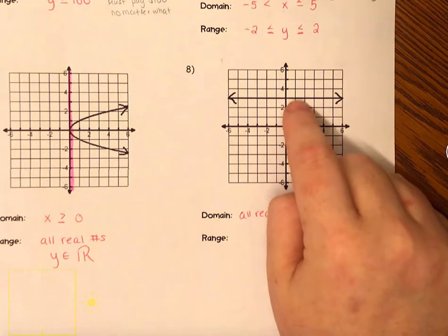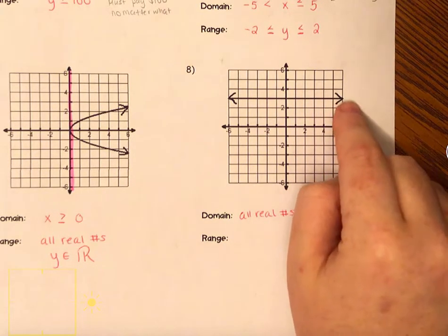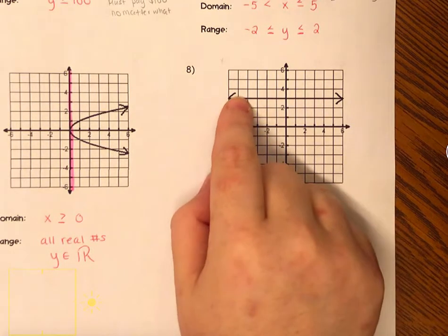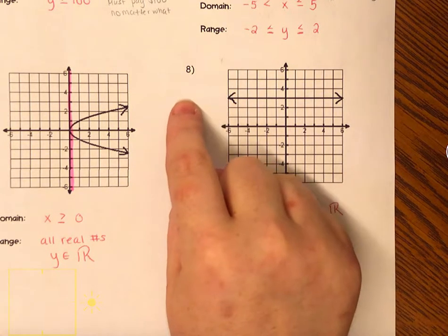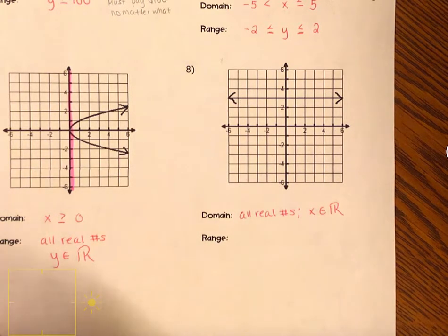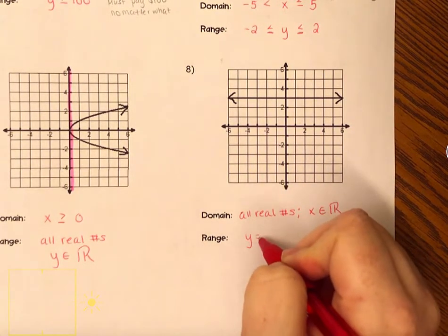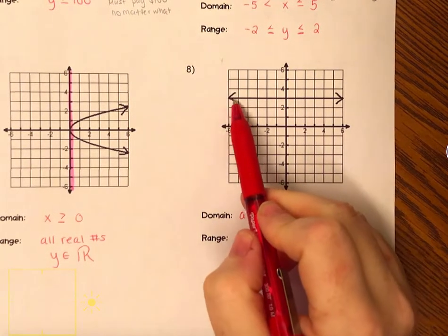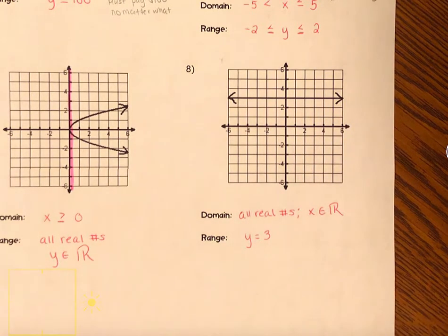Since the graph is just pointing to the right and not up or down, it stays constant at y = 3. All the y-values will be 3 — the same is true on the left side, where the graph points left but stays constant. This is a horizontal line, so the equation would be y equals positive 3. There is no bigger than 3 or less than 3; this graph will continuously only stay at 3. And that is our domain and range for continuous data sets.